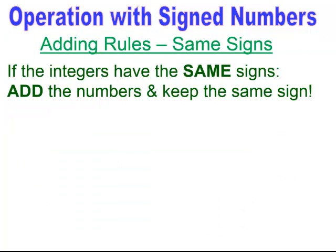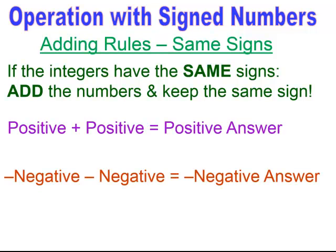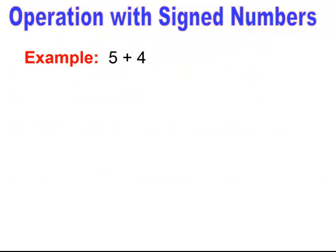Now we're going to talk about adding rules. The first adding rule is same signs. If you are adding integers and they have the same signs, you're going to add the numbers and keep the sign. With positive plus positive, we're familiar with that — two plus two is four. So here, five plus four: they're both positive, same sign, so I add and keep the sign, and I end up with just nine.